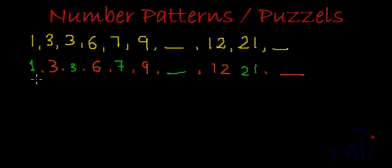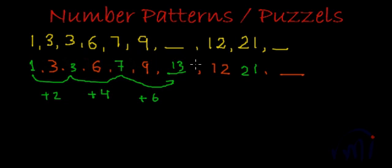Now let's consider the series in green color. If we carefully see the series in green color, we can see this 3 is actually 1 plus 2. And this 7 is 3 plus 4. 2 and 4 are even numbers. So if we add 6 over here, we should get the next number. So the next number will be 7 plus 6, which is 13.